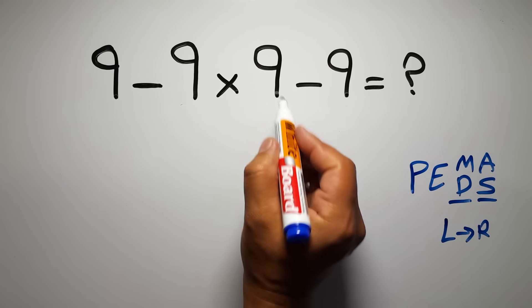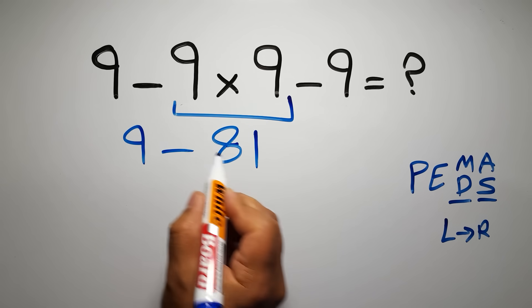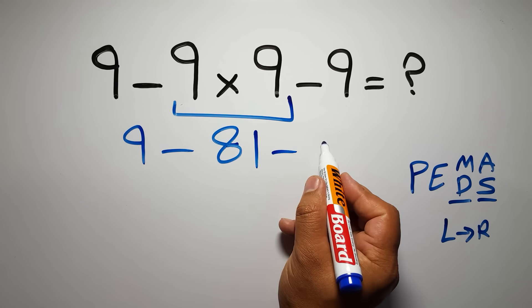So first 9 times 9, which gives us 81. So 9 minus 81 minus 9.